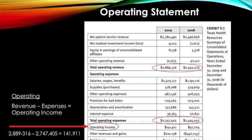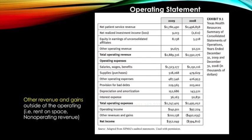Here you see the operating statement provided by Texas Health. Total operating revenue minus total operating expense gives you the operating income — this is the basic formula in the operating statement. Note all the items that make up operating revenue; in this case, net patient service revenue and net realized investment income. Anything represented with a parenthesis is defined as a loss. We also want to understand how to determine net income: net income is determined by adding operating income plus other revenues and gains.